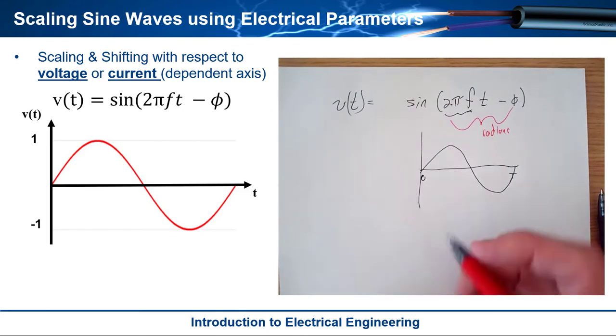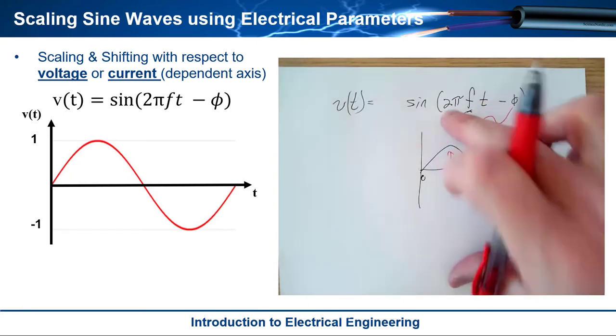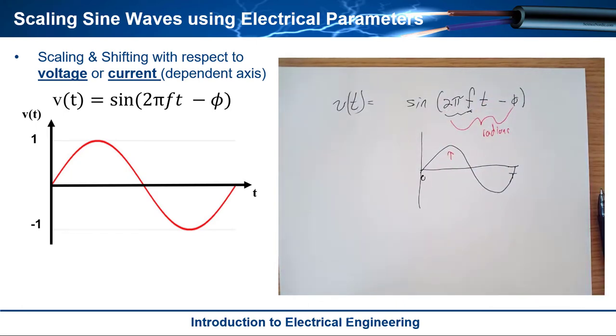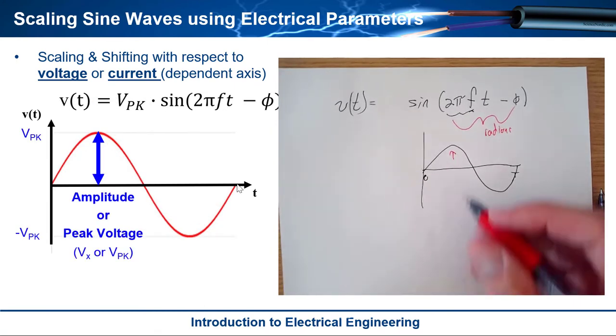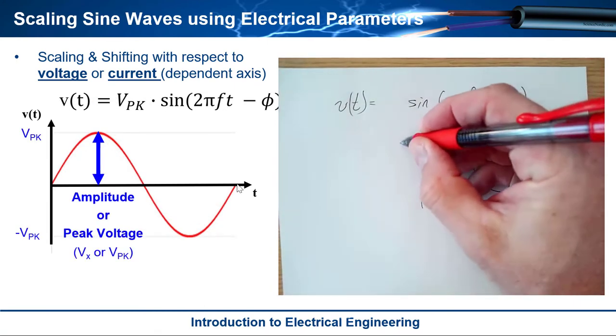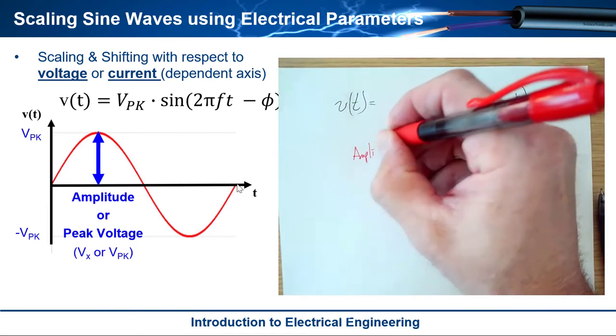But then what about if we want to scale it up or down and what if we want to make it bigger or smaller. Okay and so if you recall the definitions of the electrical parameters that control that. One of them is the amplitude or what we can call the peak voltage. And so this is the amplitude.